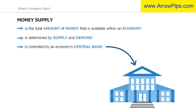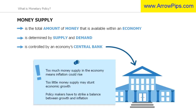It is important for a central bank to maintain control over the money supply, because when there is too much supply, inflation could start rising, whereas too little money supply can stunt economic growth. Policymakers therefore aim to strike a balance between growth and inflation.